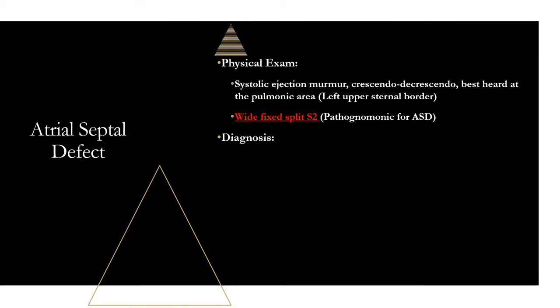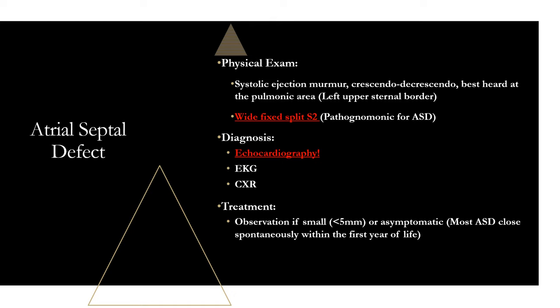For diagnosis, the best way for all of these congenital heart diseases is echocardiography. Chest x-rays and EKGs can be done but are nonspecific — echo is the way to diagnose all of them. For treatment, observation is appropriate if the defect is small — less than five millimeters — or the patient is asymptomatic. Most atrial septal defects close spontaneously within the first year of life. If they're large and symptomatic, surgical correction is the definitive treatment.